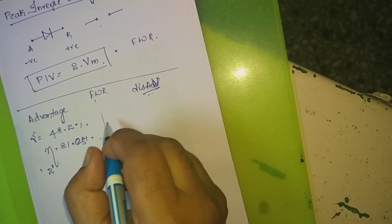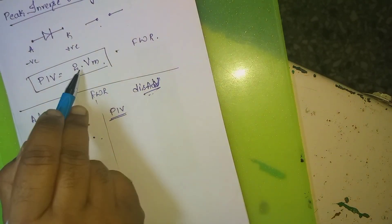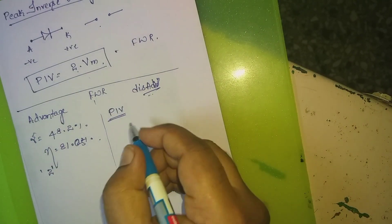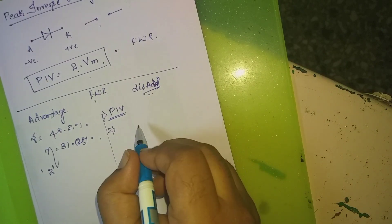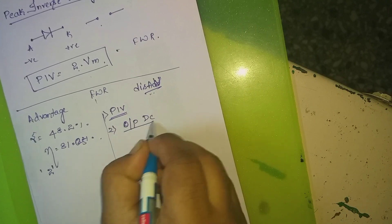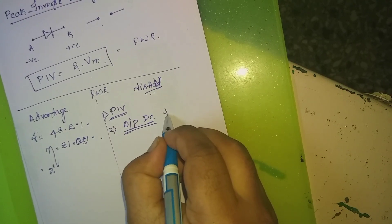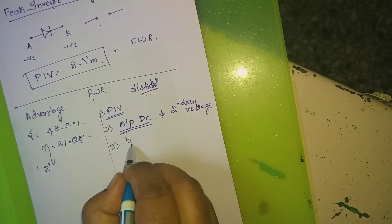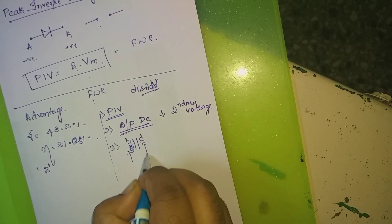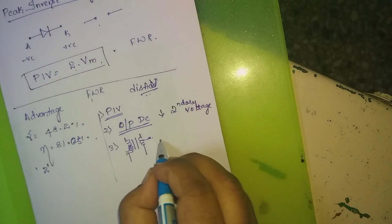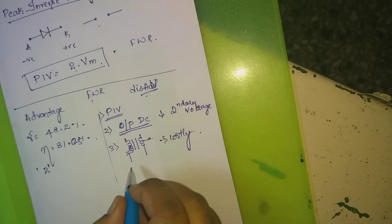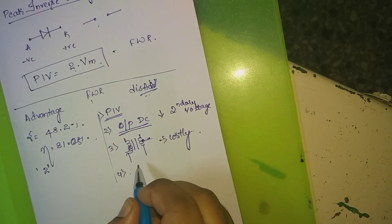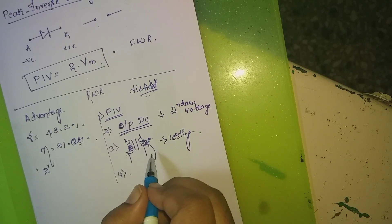The disadvantages of the full wave rectifier are: it has a high PIV value of 2Vm, compared to just Vm for the half wave rectifier. The output DC voltage is lower than the secondary voltage. The center-tap transformer required is costly. And locating the center point in the transformer is very difficult.